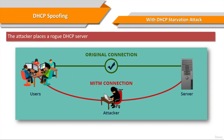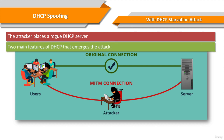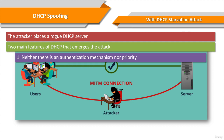In DHCP spoofing attacks, the attacker places a rogue DHCP server on the network. There are two main features of the DHCP mechanism that enable the DHCP spoofing attack. First, there's no authentication process and priority in the DHCP mechanism.